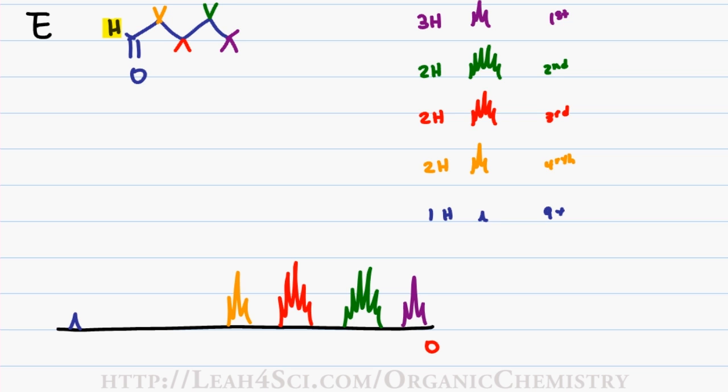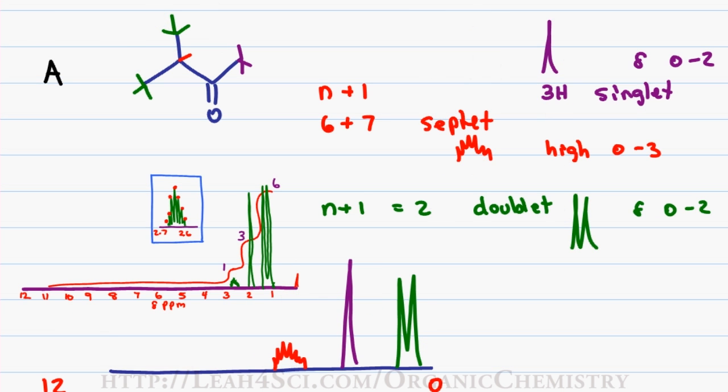What I'd like to do now is compare the graph that we were given to each of the graphs that we predicted. We've already confirmed that choice A was the correct answer. However, let's take a look. We have our doublet to the right, followed by a singlet, followed by the multiplet. We've already proven why this is correct, so let's now look at B.